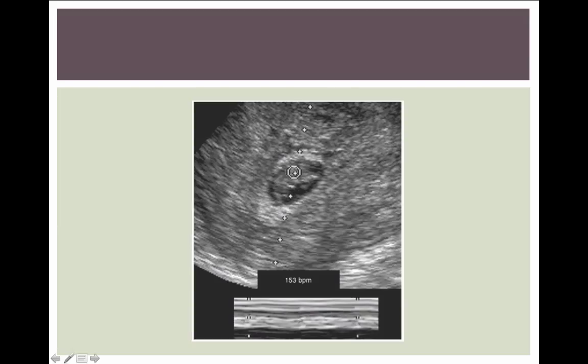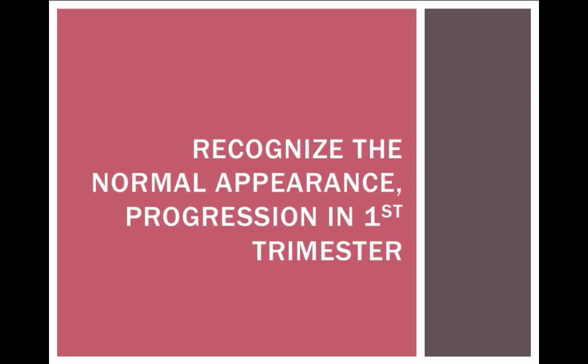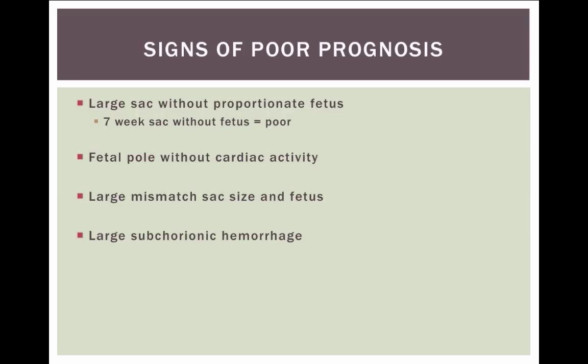Here's an example of fetal demise. We see a sac that's probably too small for this fetal pole, and we tried M-mode and couldn't see any cardiac activity. In this day and age you can just save a clip that's zoomed in and shows no cardiac activity, and then also do the color flow. How do you recognize fetal demise? If you know the normal appearance and progression of pregnancy in the first trimester, this isn't going to be that difficult. Some signs of poor prognosis include a large sac without proportionate progression in the size of the fetus.